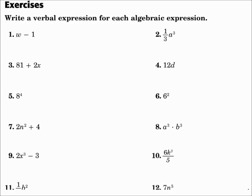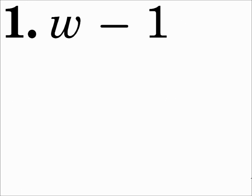Write a verbal expression for each algebraic expression. Number one: w minus one. You can be simple or elaborate. You could make this as simple as saying 'w minus one,' or you could say 'the difference of w and one,' or 'one less than w.'